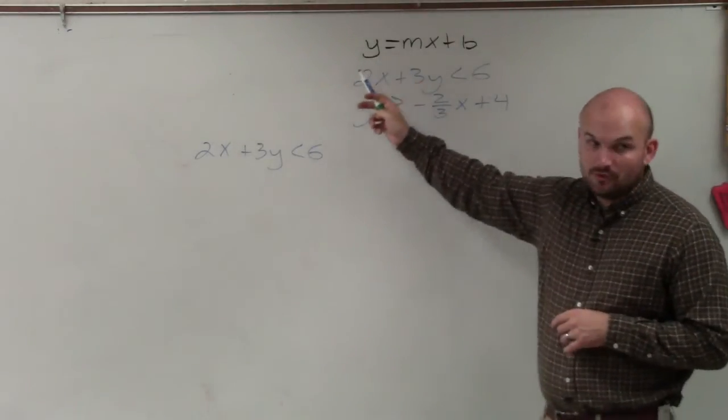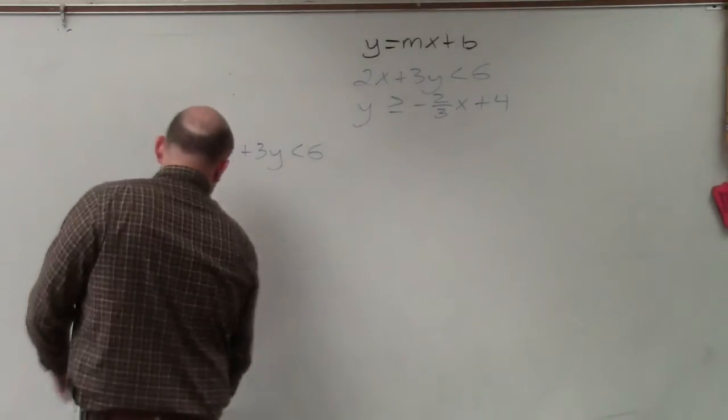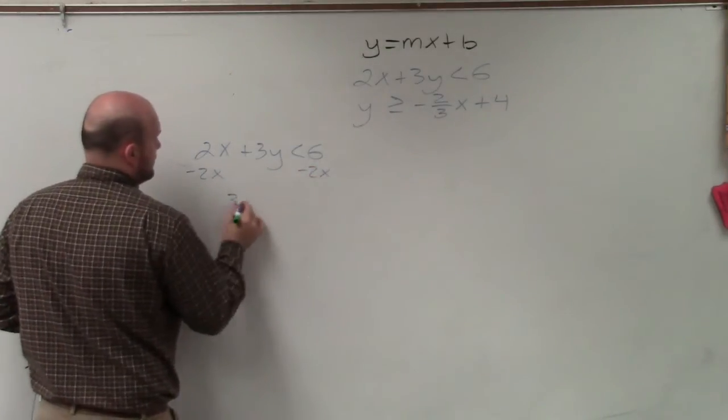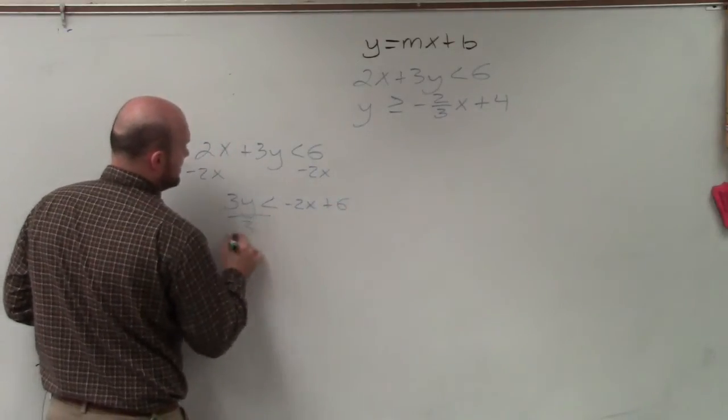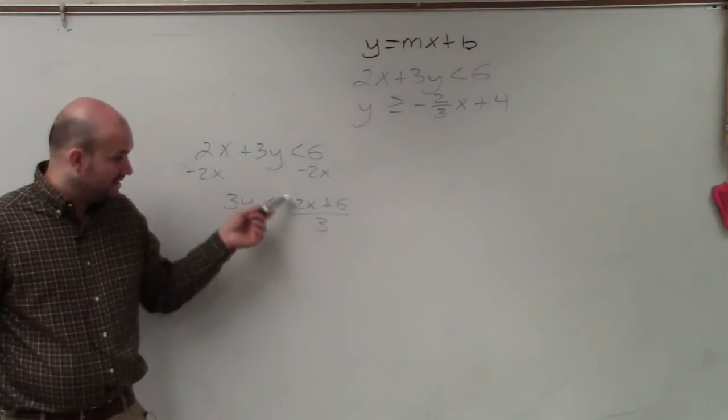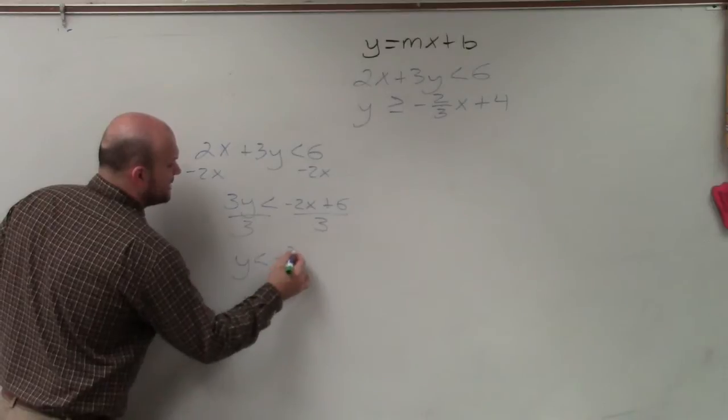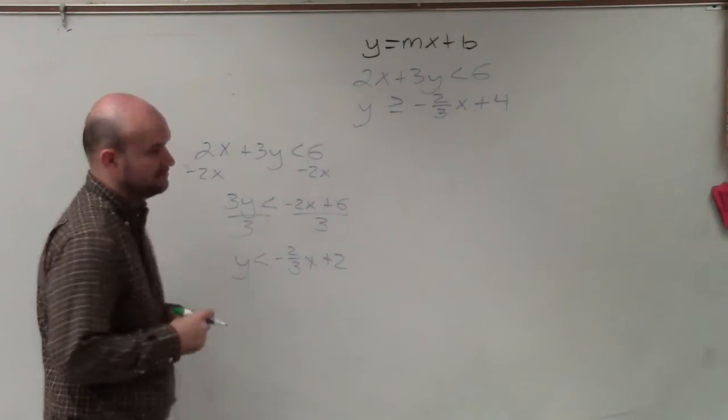So we need to solve for y. If you do not have an equation solved for y, my recommendation is to write it in slope intercept form. So to do that, I will subtract the 2x on both sides. 3y is less than negative 2x plus 6, divide by 3. Please note that the 3 you have to divide into both of those terms, so I have y is less than negative 2 thirds x plus 2.